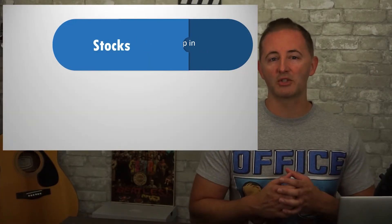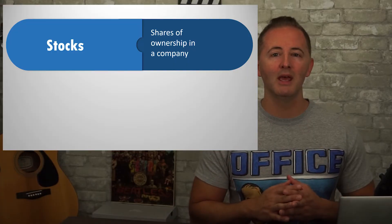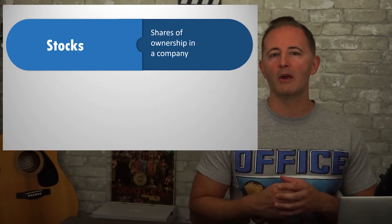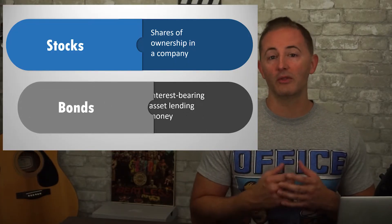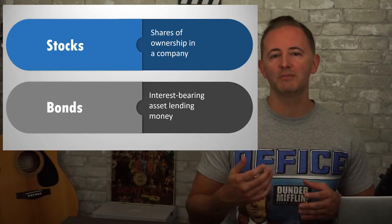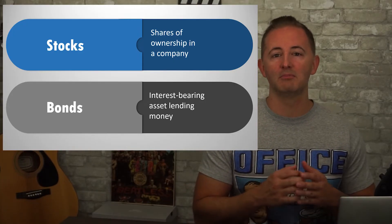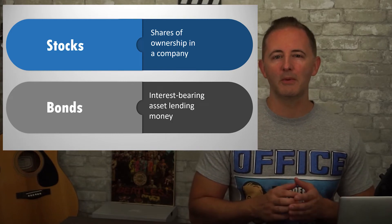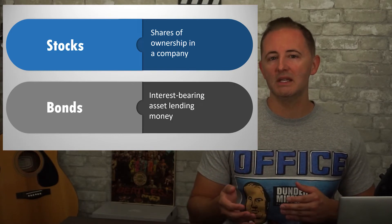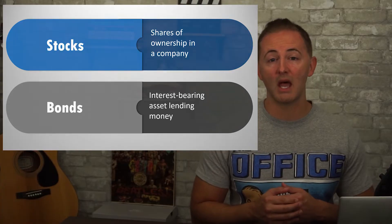Other financial assets include stocks and bonds. Stocks refer to shares of ownership in a company and typically are riskier and therefore offer a higher rate of return than bonds, which are an interest-bearing asset in which a person lends money to a company or to a government. Bonds are typically less risky and therefore offer lower rates of return than stocks.